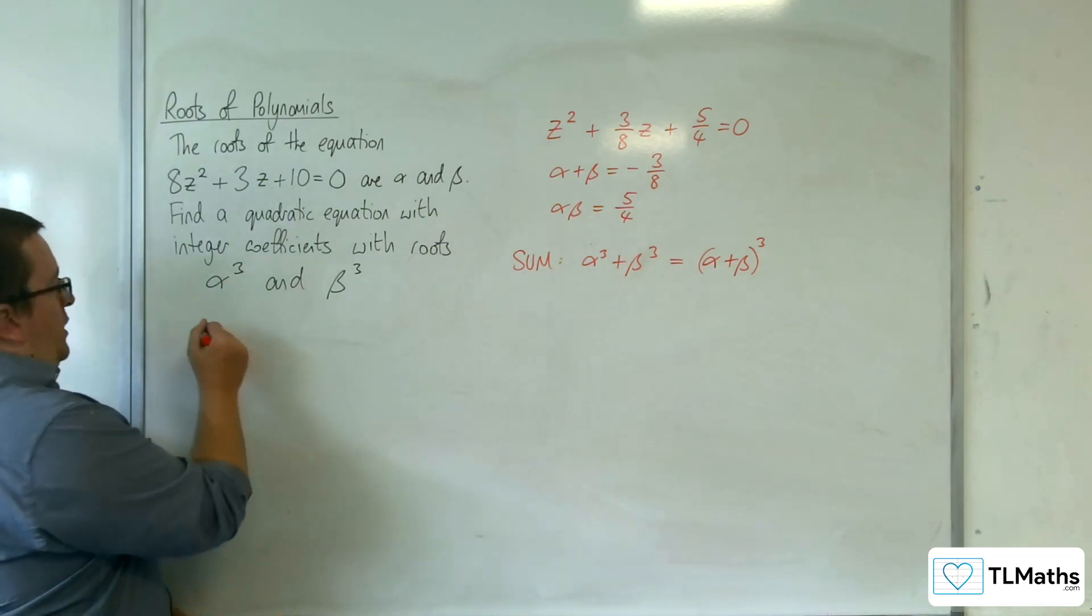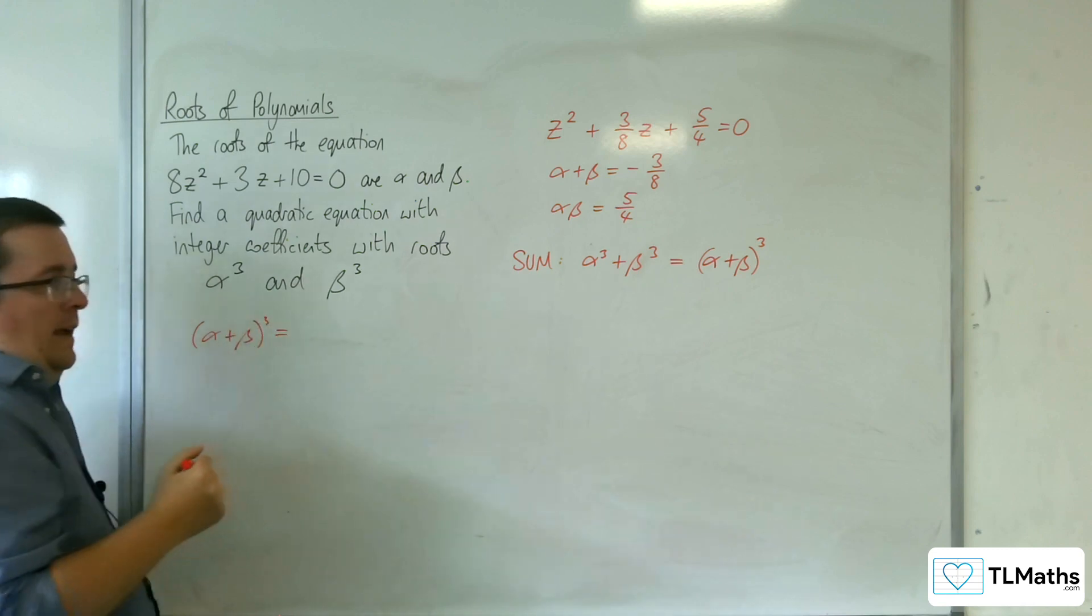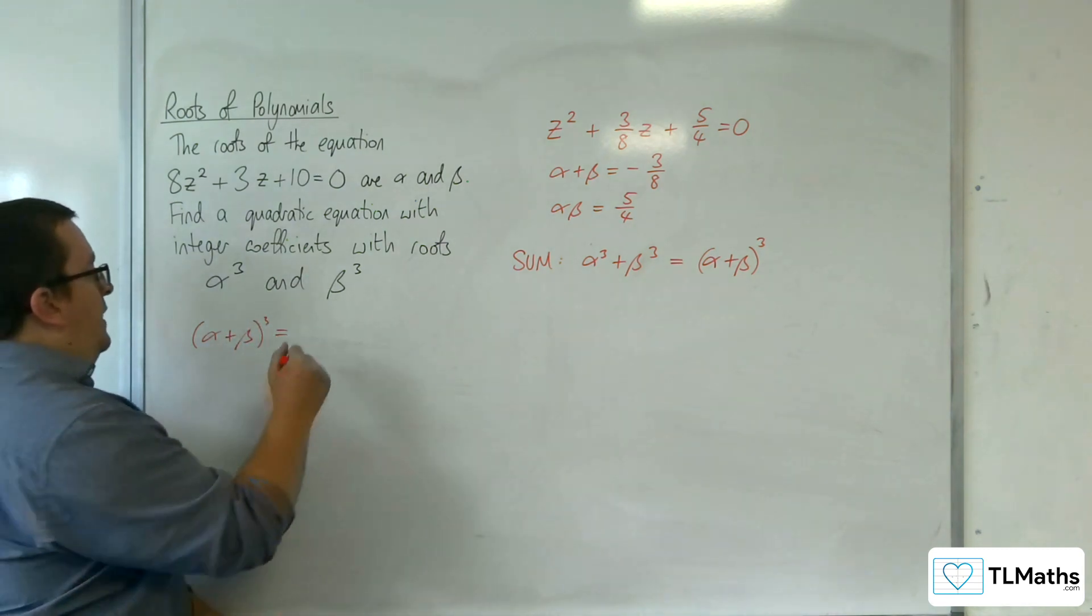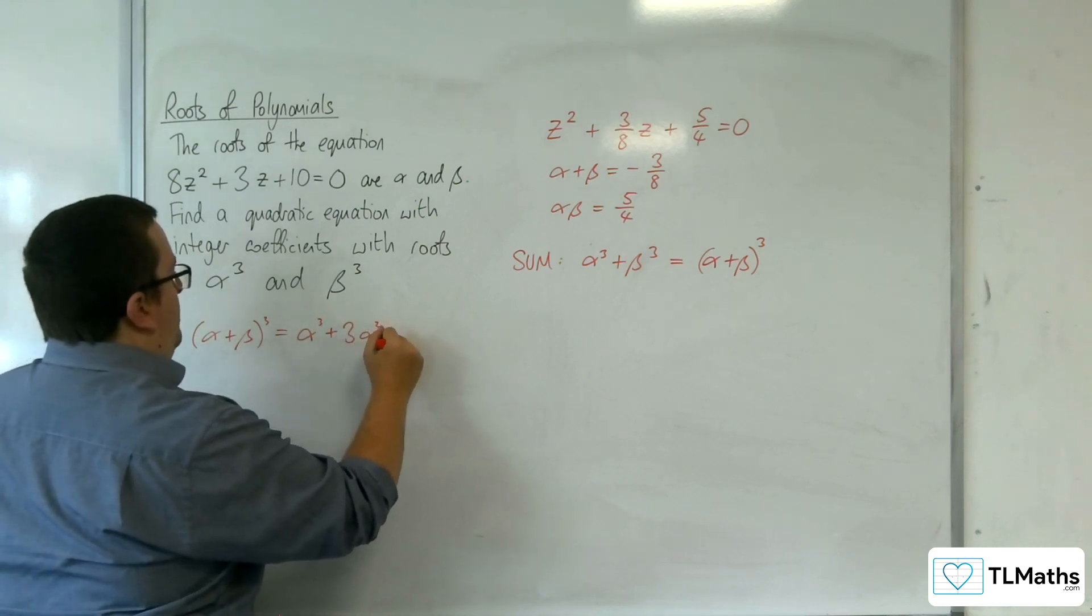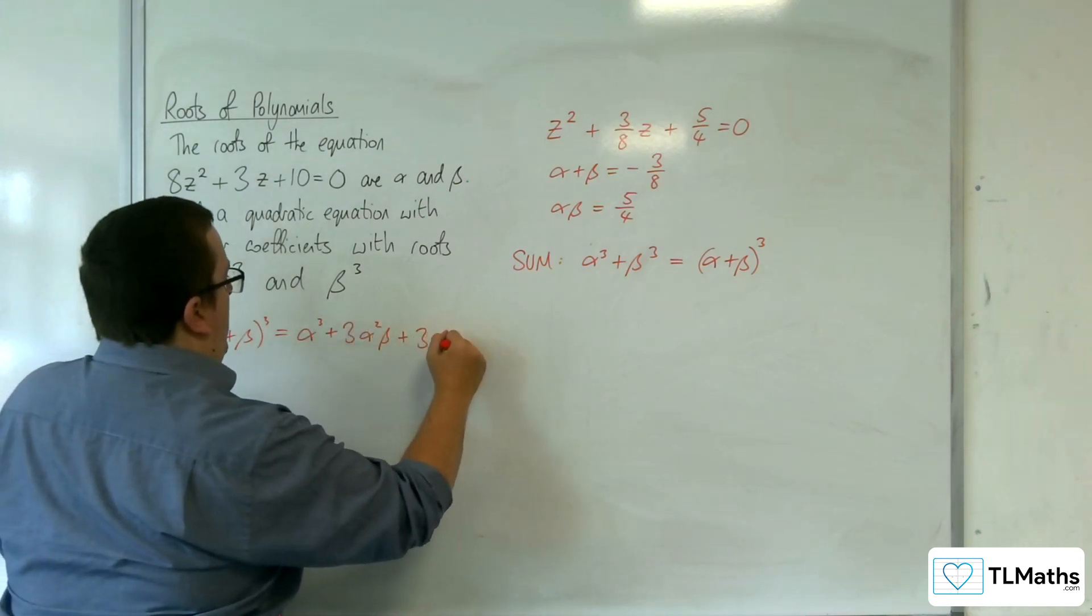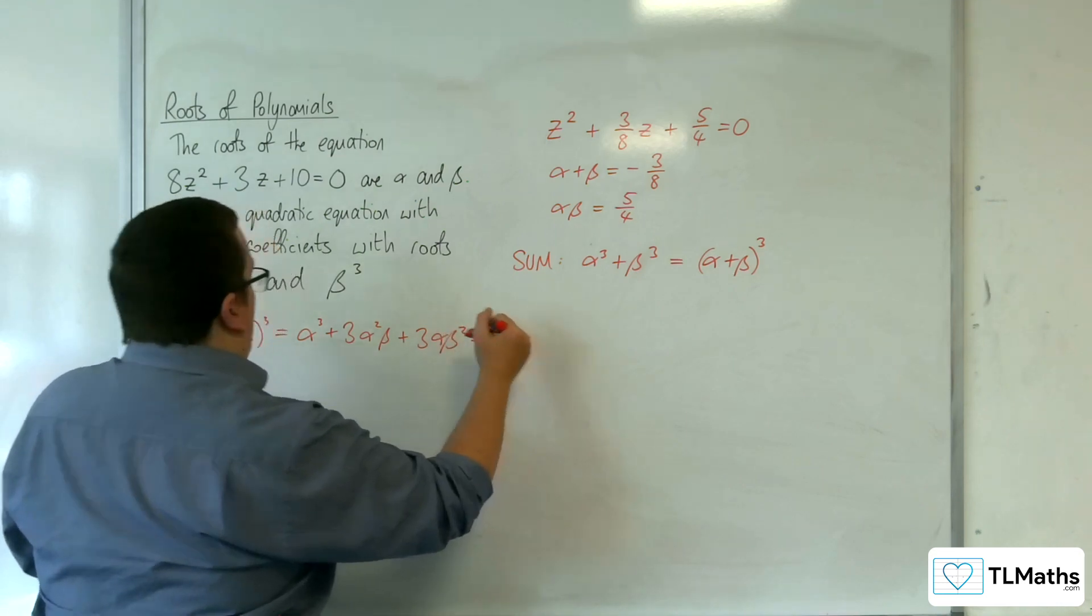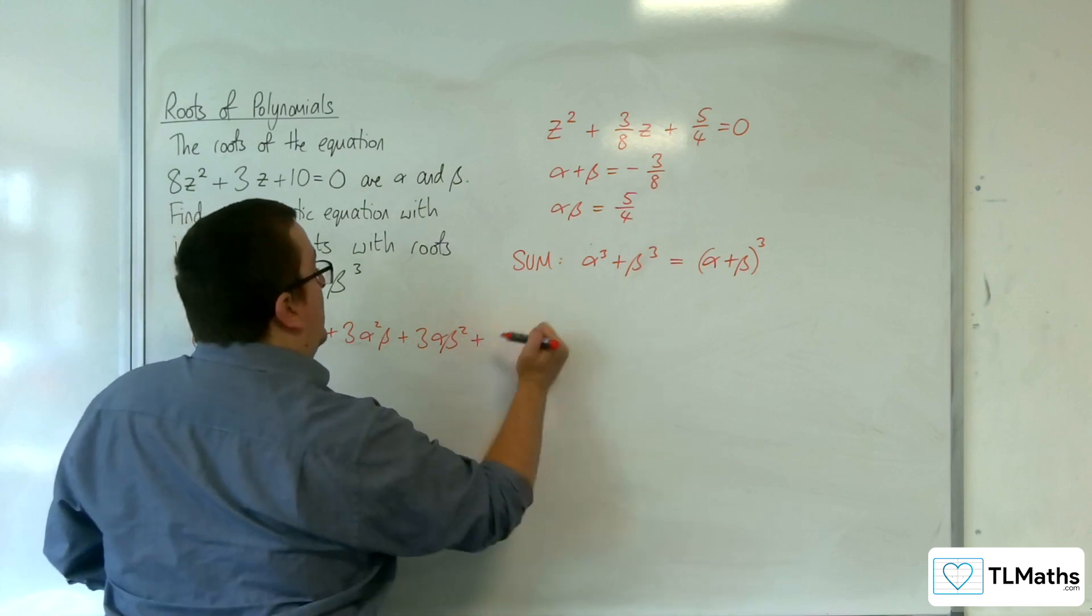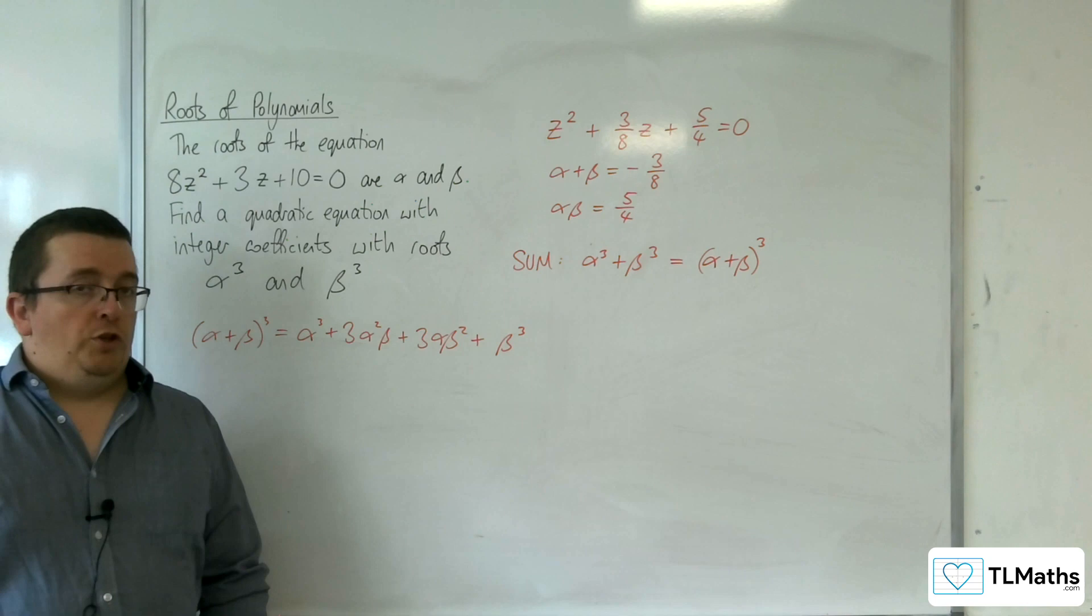What is (α + β)³? Expanding that out, you get α³ + 3α²β + 3αβ² + β³. So there's a bit of binomial expansion there.